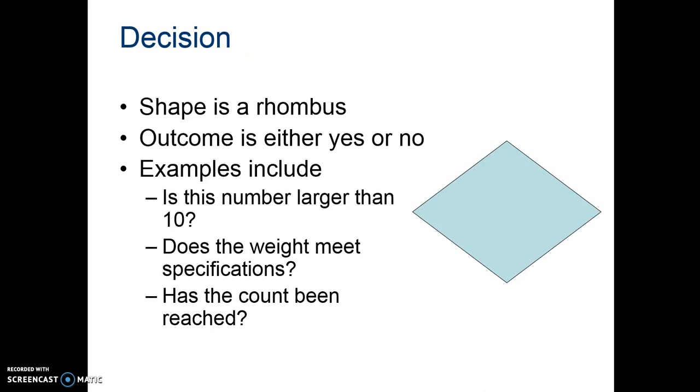A diamond, or a rhombus, this is where you're going to have a yes or no question, and it's always a yes or no. So, you're going to have a decision, and this is where you have multiple paths. If it's yes, you're going to go one direction, and do the next step if the answer is yes. If the answer is no, then you're going to go another direction, at least that's what you're going to have to program.